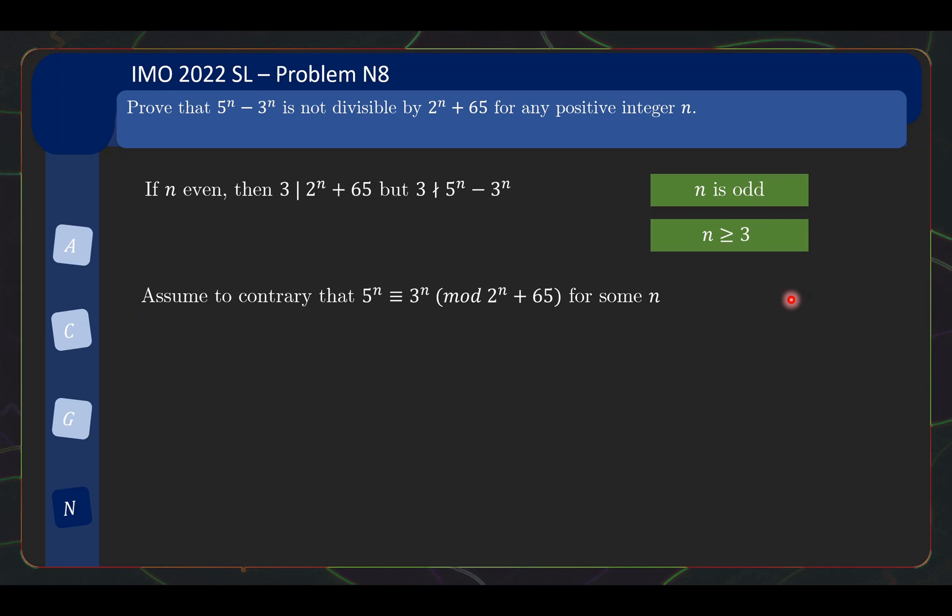The second sentence is if we assume on the contrary that we have some n that satisfies this divisibility condition, meaning 5^n is congruent to 3^n mod 2^n + 65, then the Jacobi symbols must evaluate to the same thing. Let's evaluate what the Jacobi symbols are on the left and right. On the right, by the multiplicative property, this thing is 3 over 2^n + 65 to the power of n. But using the fact that n is odd, we know that whether it's 1 or -1, if you pair up and take the square, you will be equal to 1. The sign depends on just the last term, whether this individual term is 1 or -1.